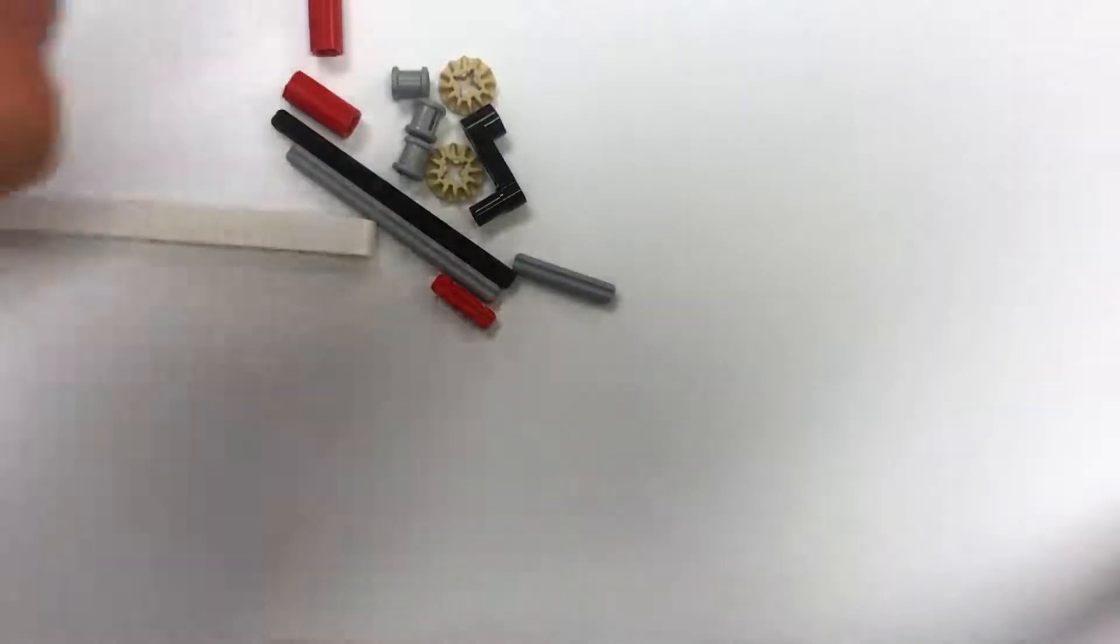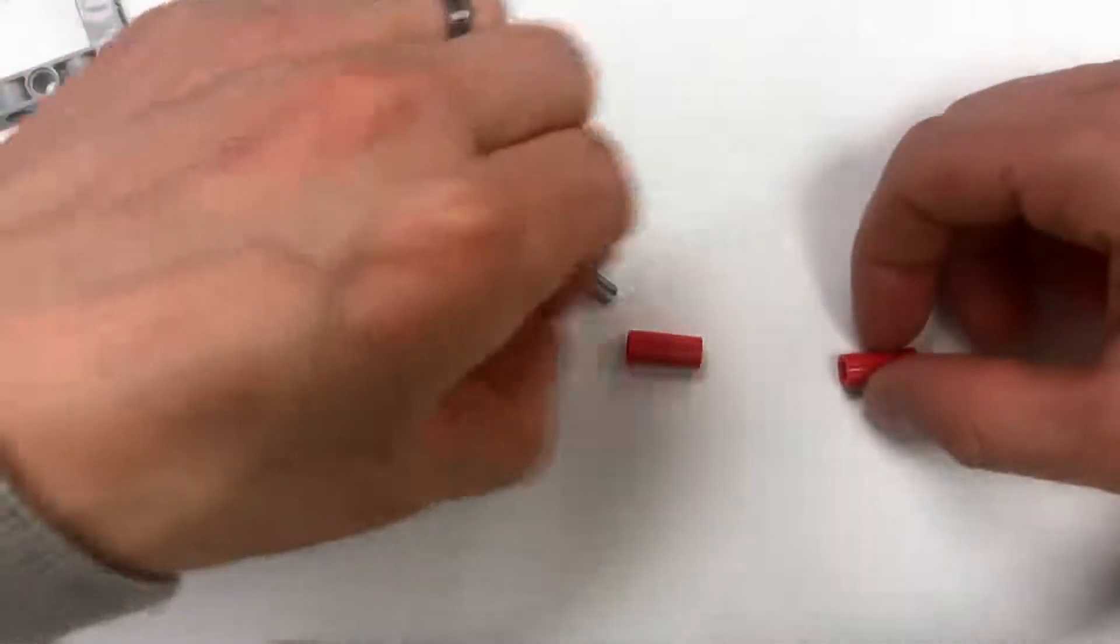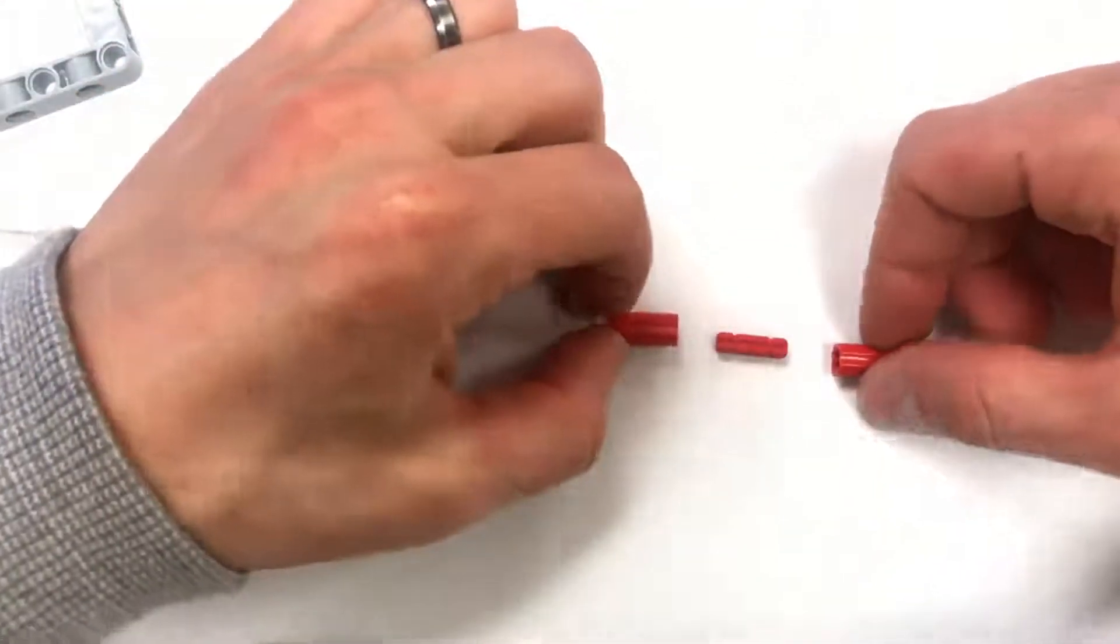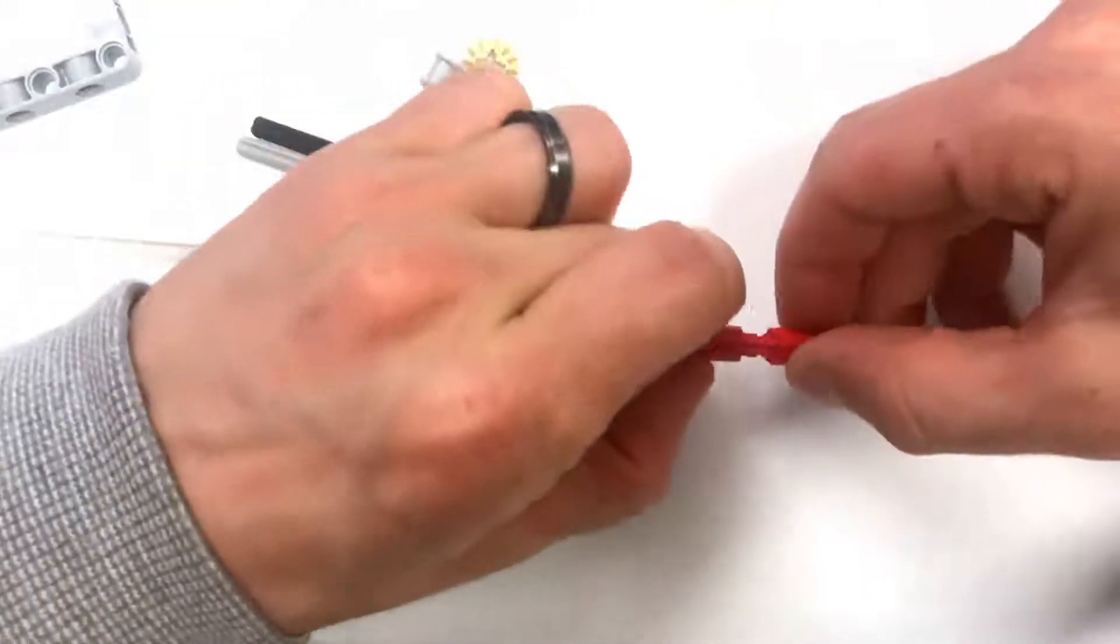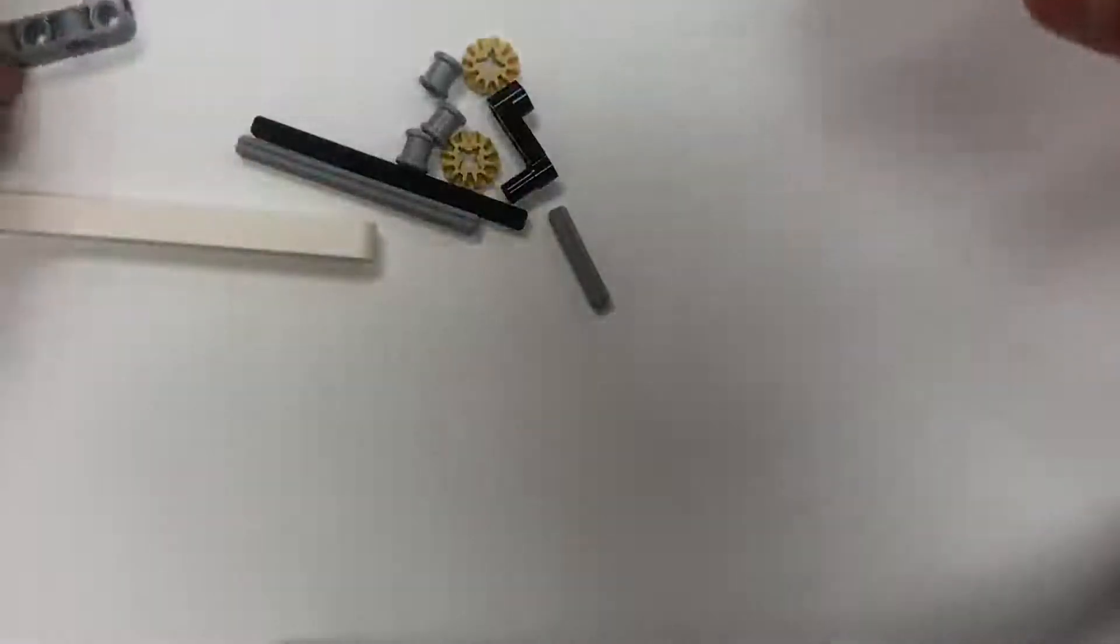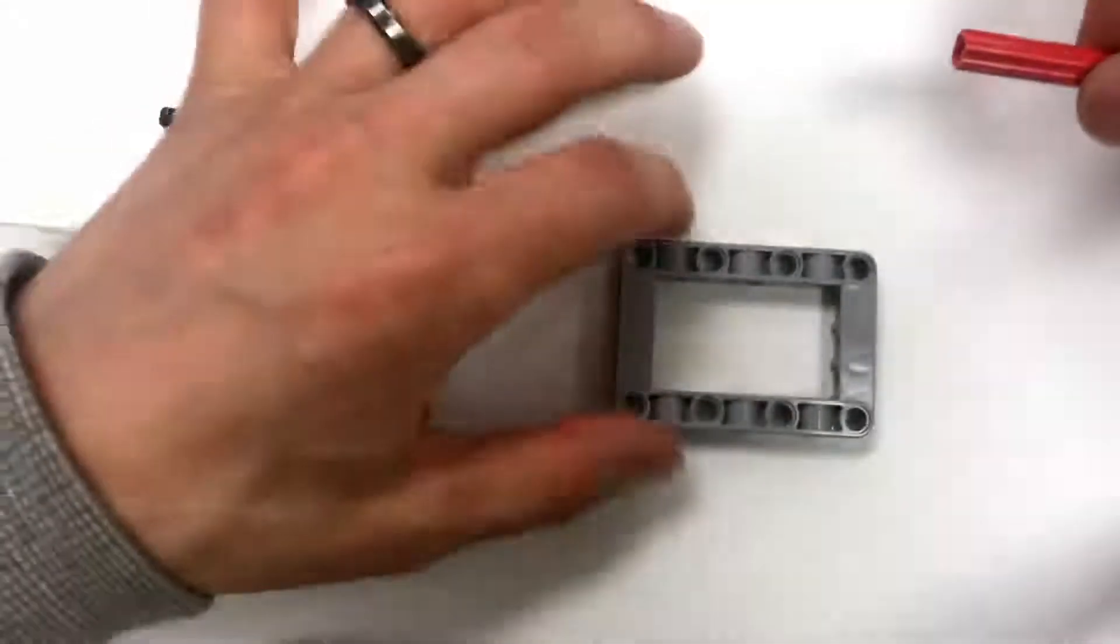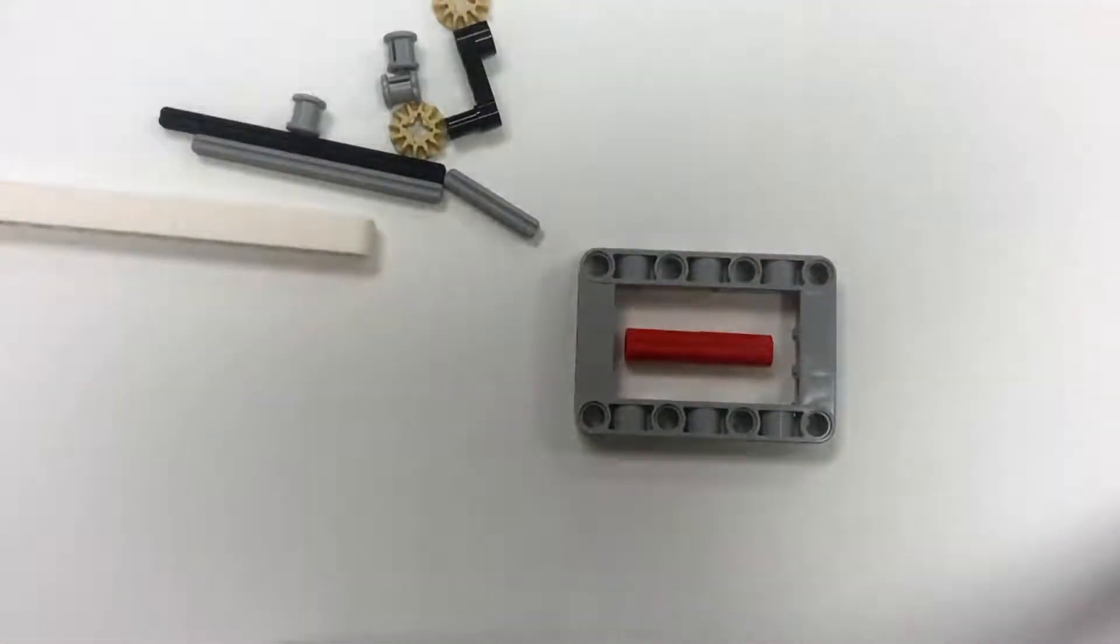First thing we're going to do is take the two axle couplings and stick them together with this number 2 axle. They're just going to go right in. Then we're going to take the picture frame and set it there in the center, and we're going to put this in the center.